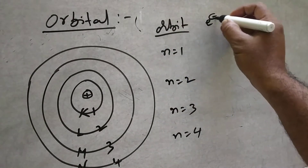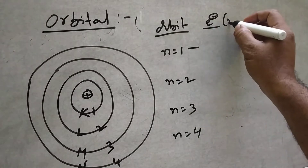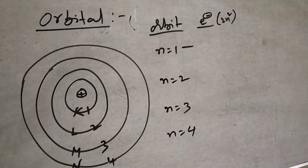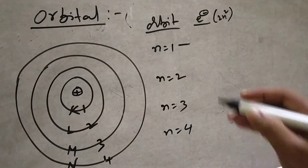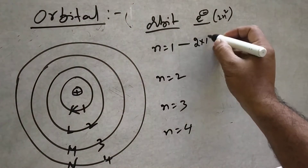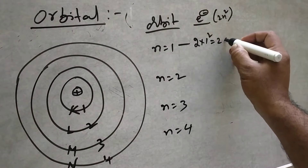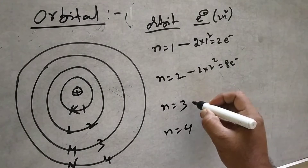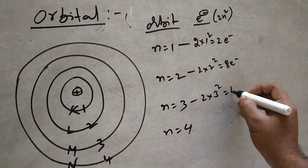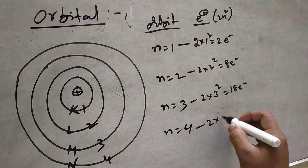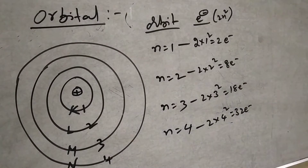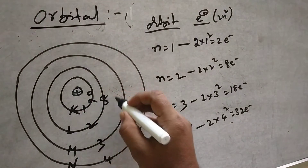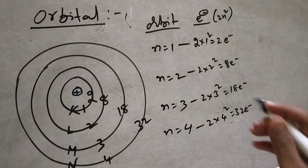How many electrons are present? By applying the 2N² equation, we get an idea. In the first orbit, 2 into 1² equals 2 electrons. 2 into 2² equals 8 electrons. 2 into 3² equals 18 electrons. 2 into 4² equals 32 electrons. So: 1st orbit 2, 2nd orbit 8, 18, 32, 50 — it will go like that.